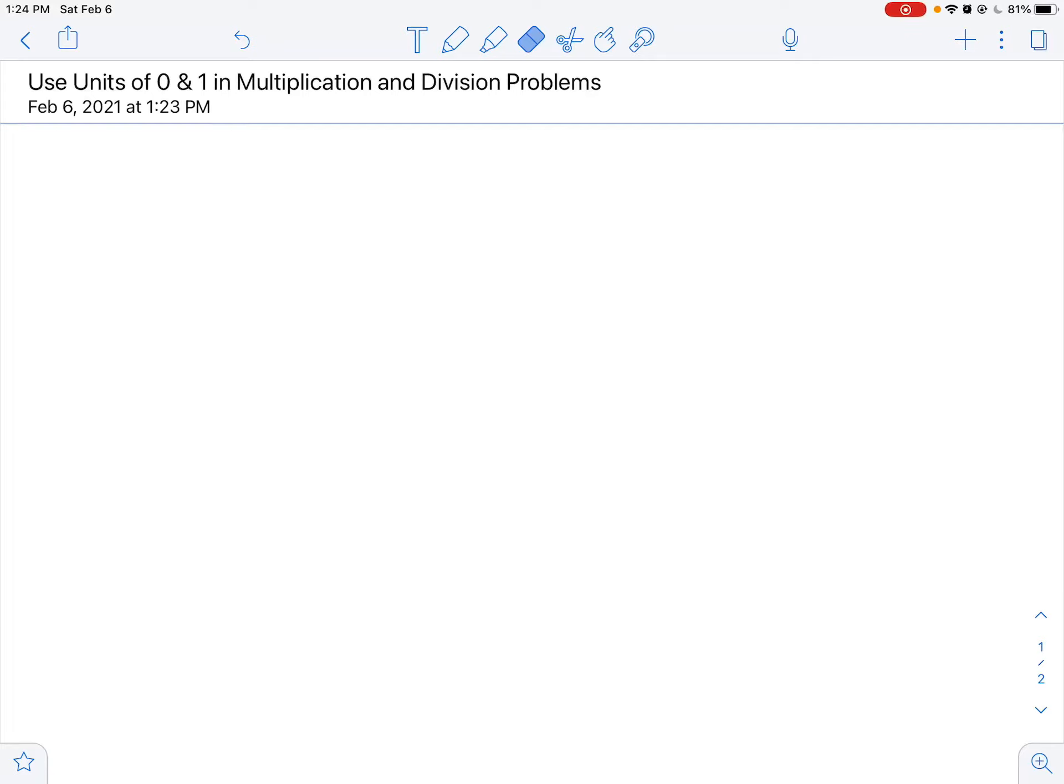Hello everybody. Today we're going to take a look at how to use the units of 0 and 1 when we're multiplying and dividing. So we're going to learn a couple of general rules that are really good to know when you multiply and divide any number by 1 and when you multiply any number by 0 or divide 0 by any number.